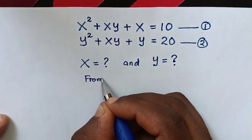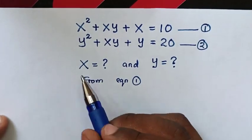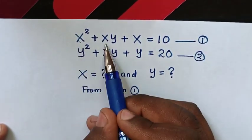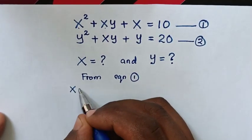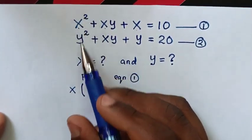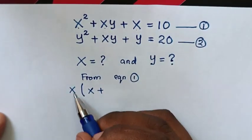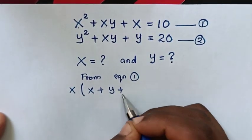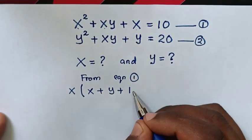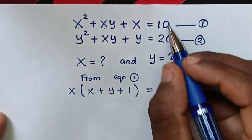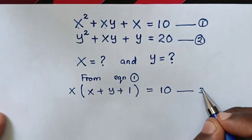From equation 1, x is common. So we take x out of bracket, then x plus y plus 1 in bracket is equal to 10. We let this equation 3.